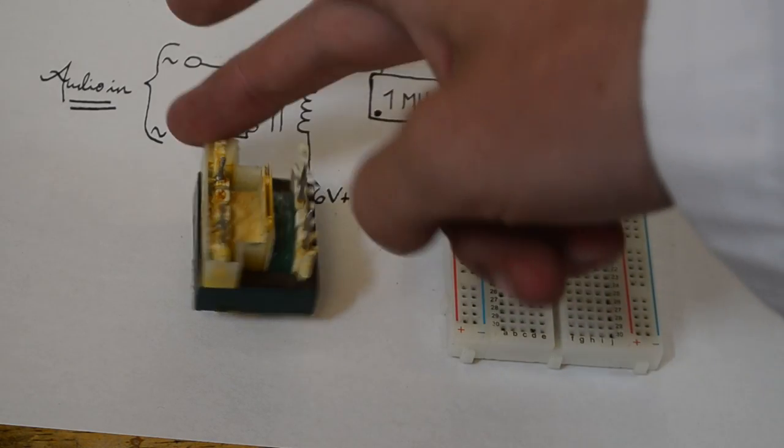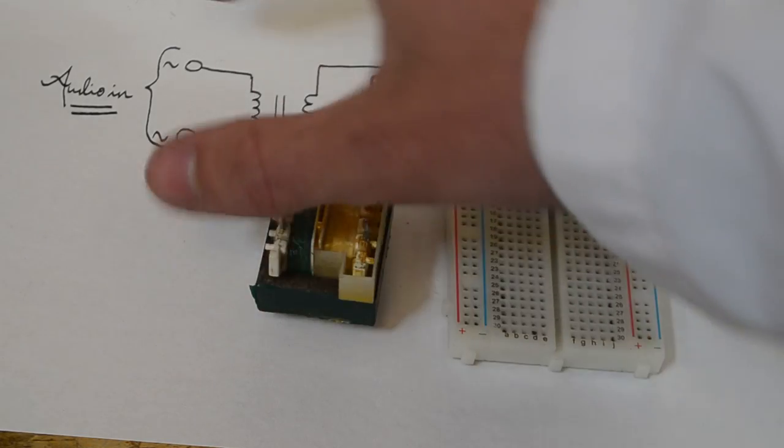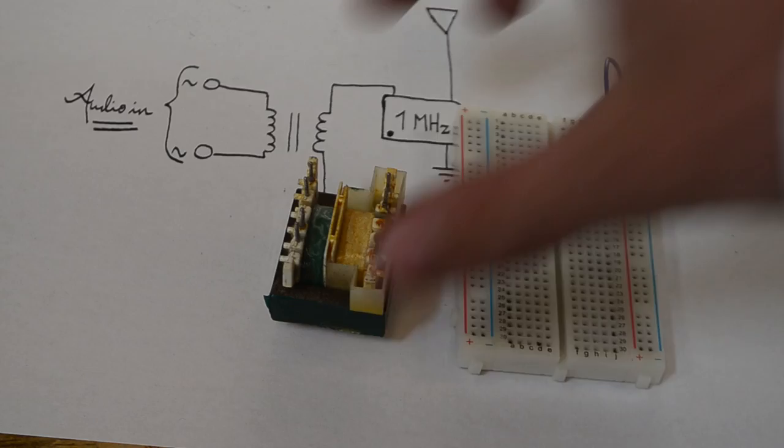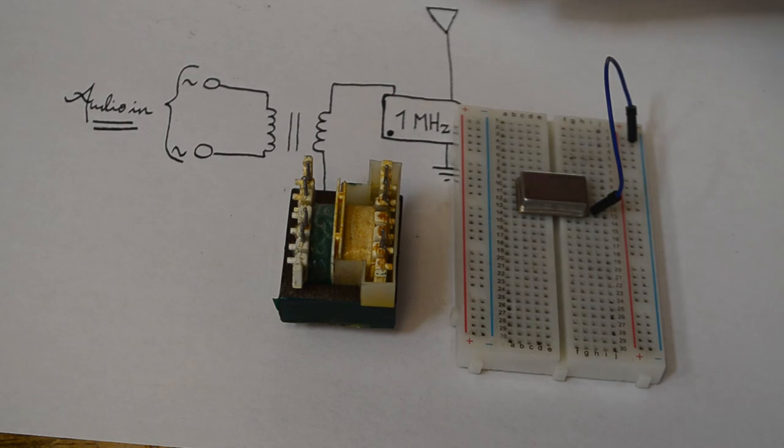Now depending on which coil we use for which side will give us different results. I've found though by using the lower resistance coil on the audio inside we tend to get a higher signal out up here. This is because the voltage from the audio in is being stepped up so therefore it's modulating this a little bit more.